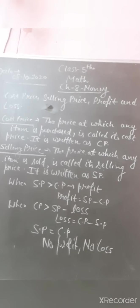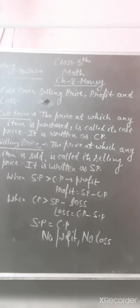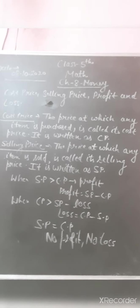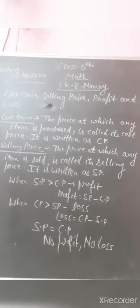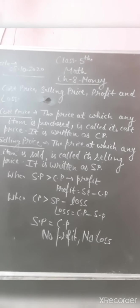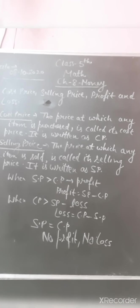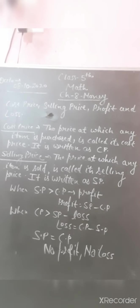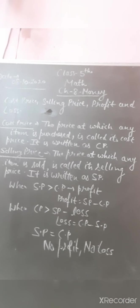Let me give you a canteen example. Suppose you bought a packet of chips for 5 rupees and gave it to a friend for 7 rupees — you got 2 rupees more, so that 2 rupees is your profit. If you give it at 5 rupees, there is no profit, no loss. If you give it at 3 rupees, there is a loss. Profit is SP minus CP; loss is CP minus SP.